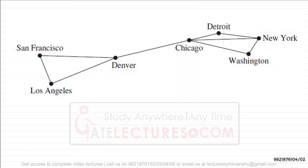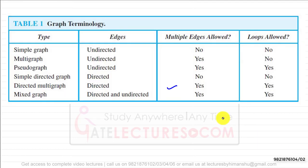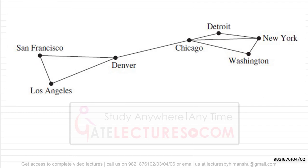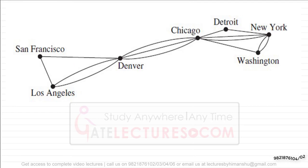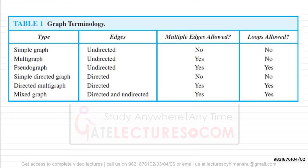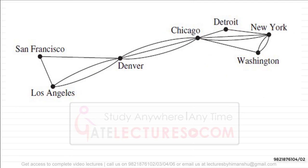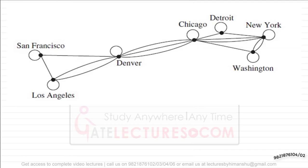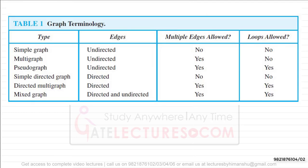Looking at examples of all six graph types: a simple graph has no multiple edges and no loops. A multi graph allows multiple edges but loops are not allowed. A pseudo graph has undirected edges where both multiple edges and loops are allowed.